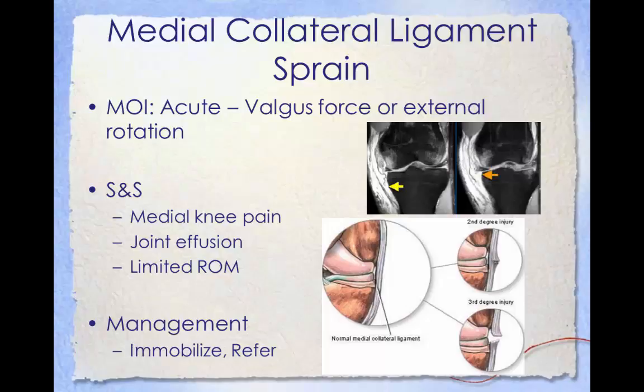The medial collateral ligament is the large ligament on the inside of the knee that links the femur to the tibia. Damage to a ligament is referred to as a sprain and is classified as first, second, or third degree. The injury is usually caused in one of two ways: in collision sports such as soccer, rugby, and American football, the MCL can be damaged when an opponent applies a force to the outside of a player's leg just above the knee; alternatively, the MCL can be damaged if cleats get caught in the turf and the player turns away from the planted leg. Common signs and symptoms include medial knee pain, joint effusion, and limited range of motion. Management includes immobilization and referral; MCL injuries are most frequently not surgically repaired due to poor healing rates.